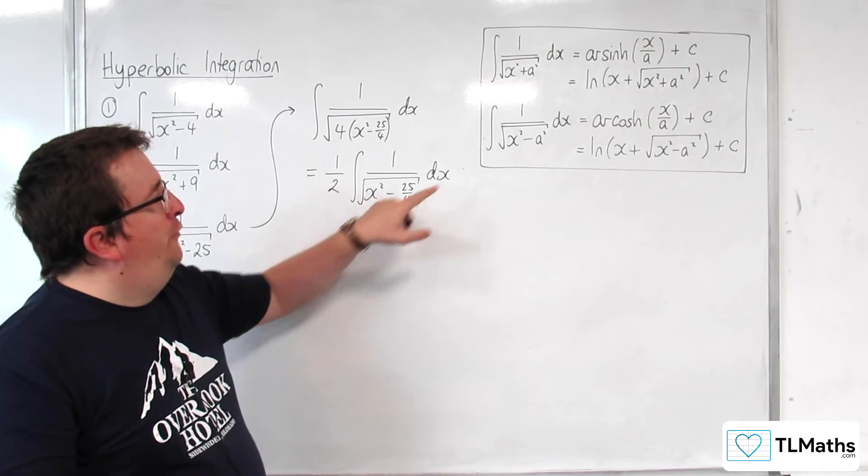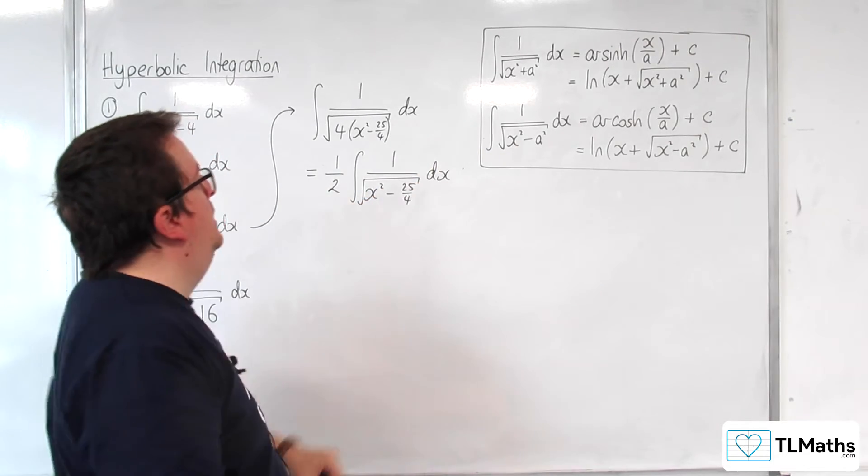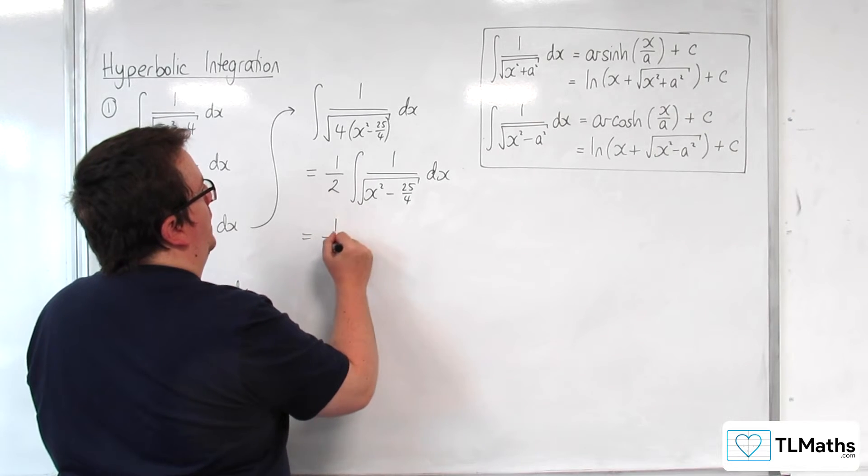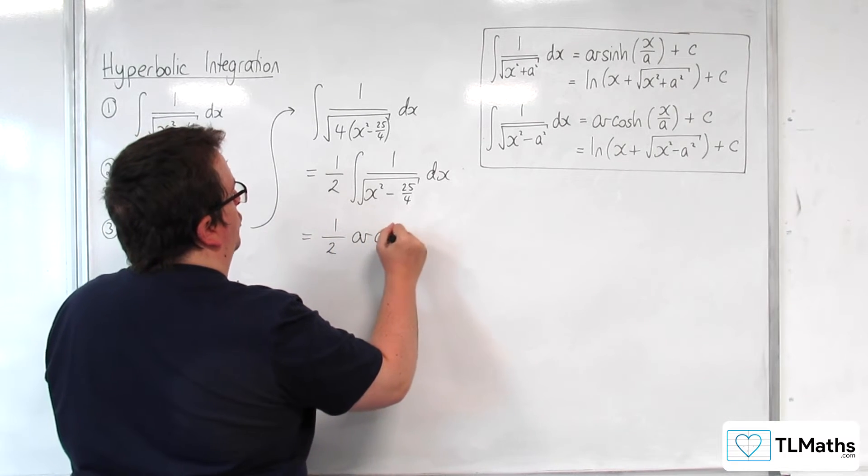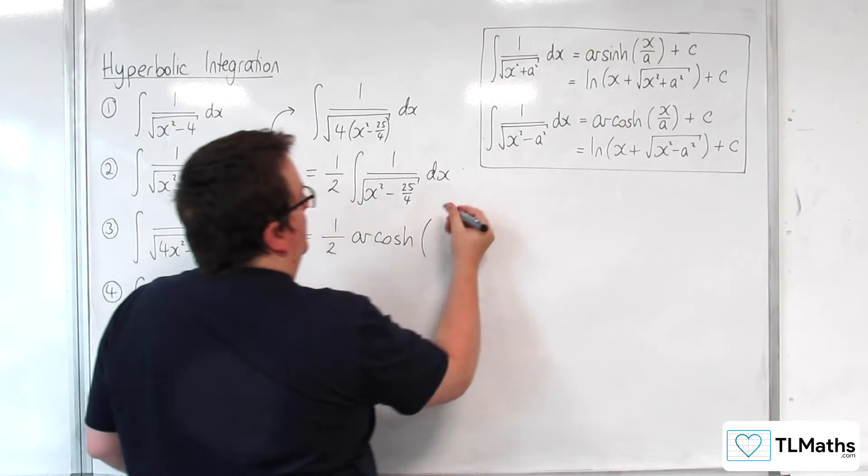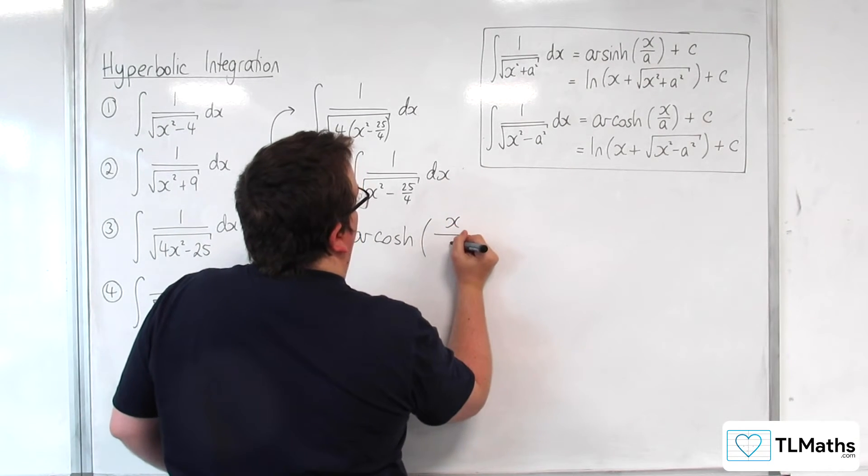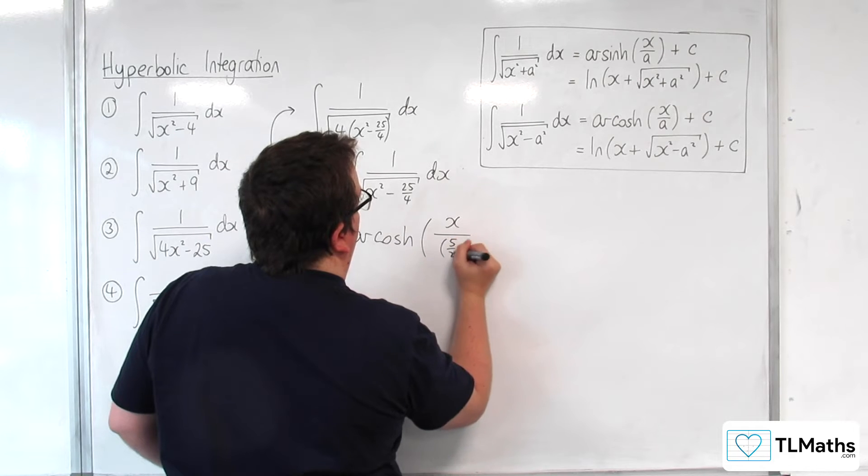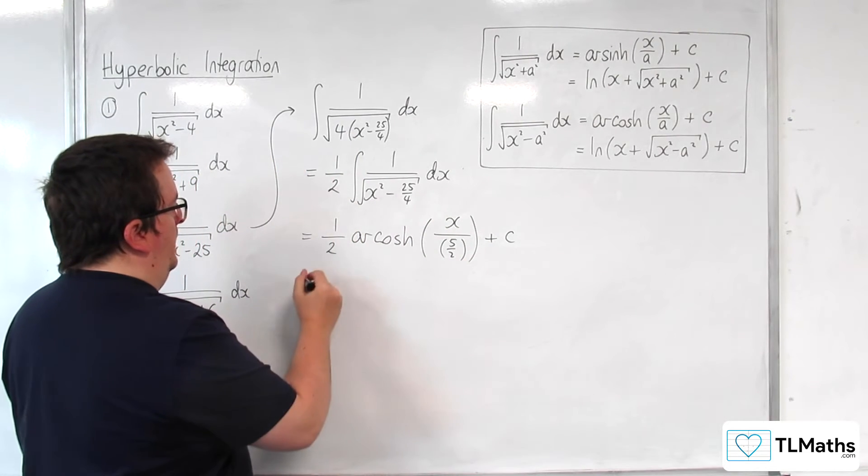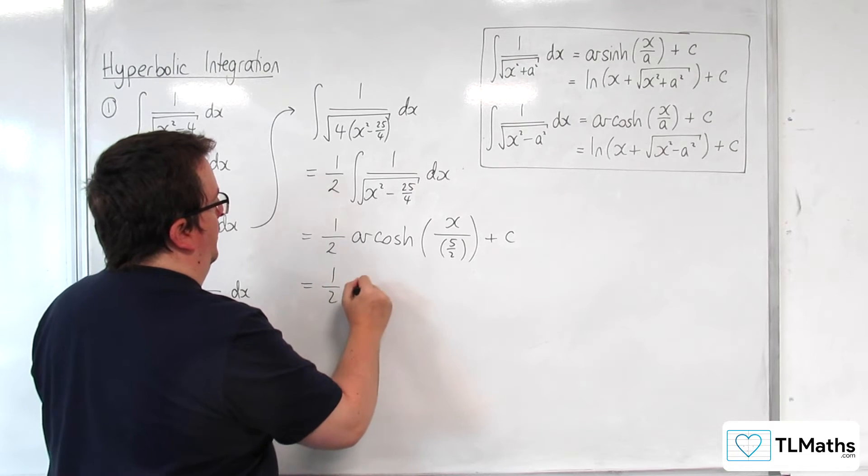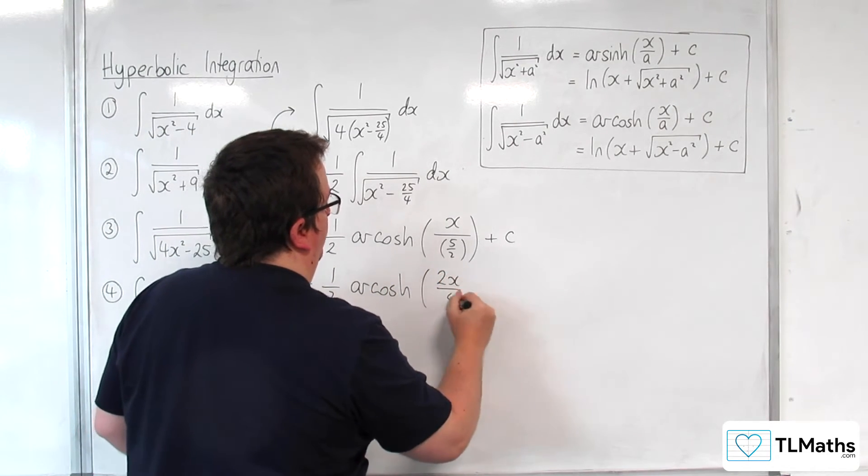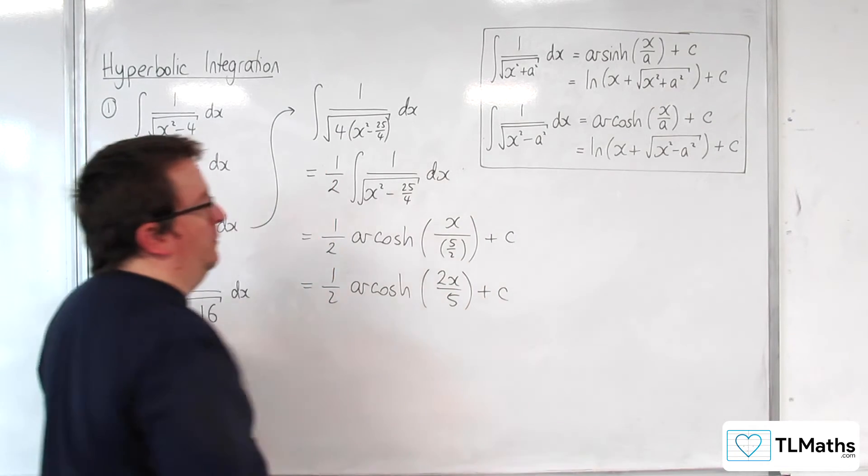And now that is in the format that I need here, where a is going to be 5 halves. So we have 1 half times arcosh of x over 5 halves plus some constant c. So I'd write that as 1 half arcosh of 2x over 5 plus some constant c.